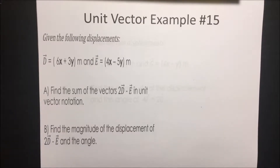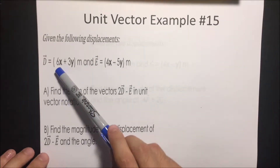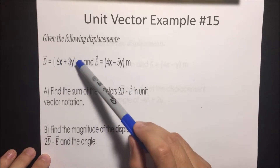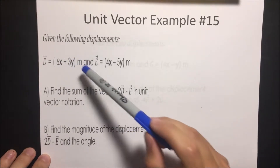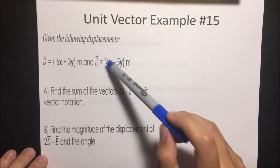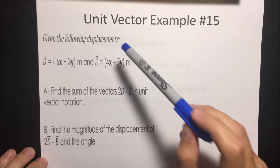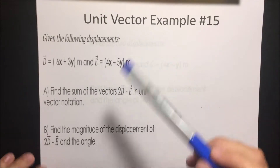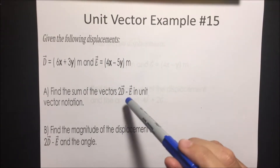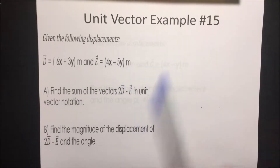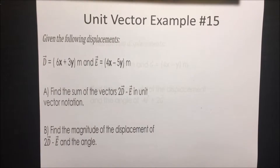Given the following displacements: vector D is 6 in the x direction plus 3 in the y direction in meters, and vector E is 4 in the x direction and negative 5 in the y direction in meters. Find the sum of the two vectors 2D minus E in unit vector notation.